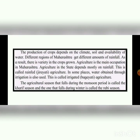The production of crops depends on climate, soil, and availability of water. Different regions of Maharashtra receive different amounts of rainfall, resulting in a variety of crops grown. Agriculture is the main occupation in Maharashtra, and it depends mostly on rainfall — this is called rain-fed or jiharati agriculture. In some places, water obtained through irrigation is also used, called irrigated or bagayati agriculture. The agriculture season during the monsoon period is called the kharif season, and the one during winter is called the rabi season.